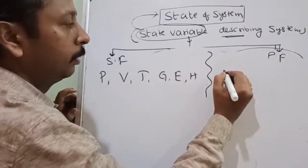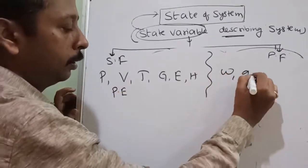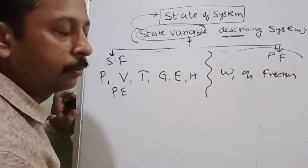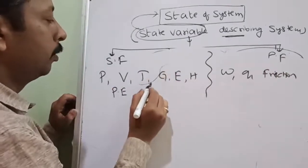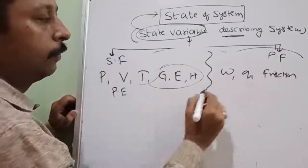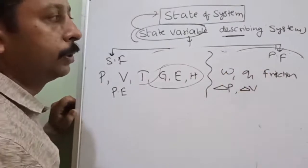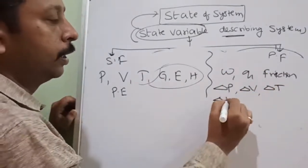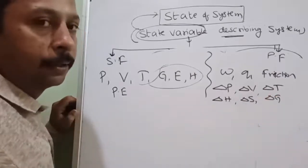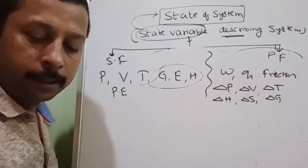Path functions include work, heat, and energy lost due to friction. If you are doing a cyclic process, the energy lost due to friction will not be zero. As soon as you put delta before a quantity, that will become a path function; otherwise they will be state functions. So if someone asks about delta temperature — that is a state function. Delta entropy — that can be tricky. Any doubt about this?